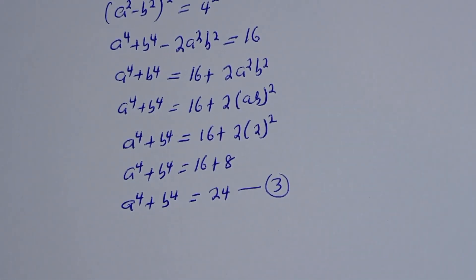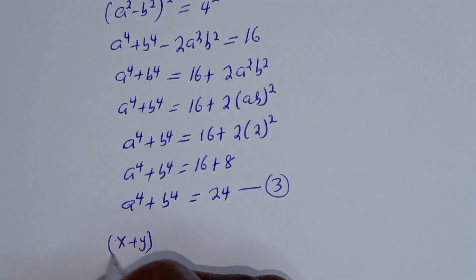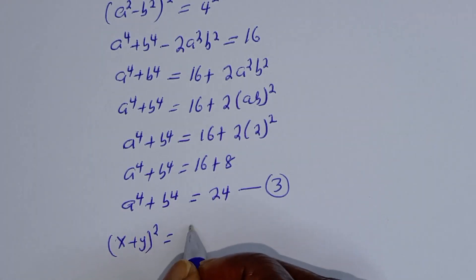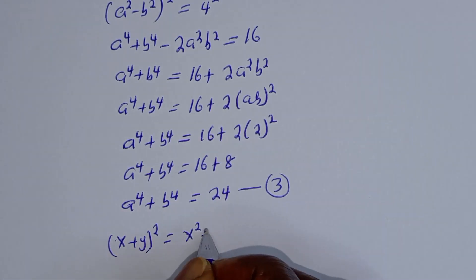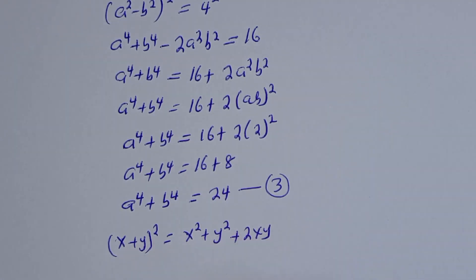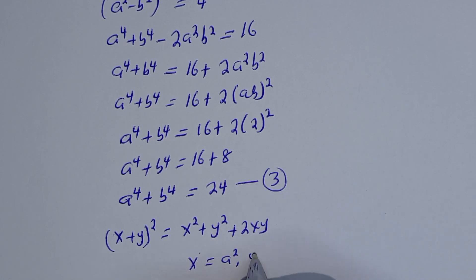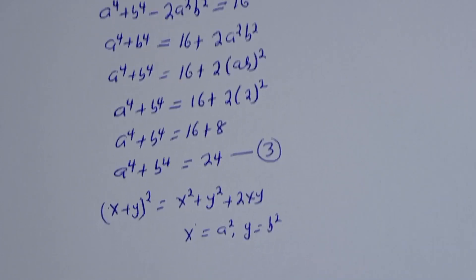Now take note of this rule: if you have (x plus y) all squared, this equals x squared plus y squared plus 2xy. Here, let x equal a squared and y equal b squared. Let's substitute.